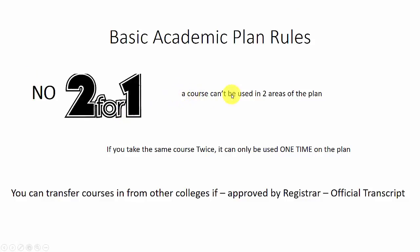Now some basic academic plan rules: no two-for-ones — a course can't be used in two areas of the plan. Also, if you take the same course twice it can only be used one time on the plan. Finally, you can transfer courses in from other colleges if they're approved by the OCTC registrar. This happens by having an official transcript sent from the old school to our registrar, who will then review it and let you know what has been approved and how it transfers in.